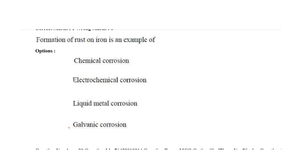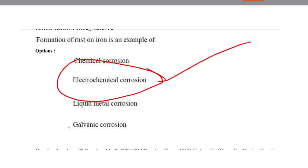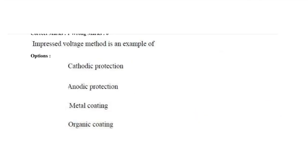Next question: formation of rust on iron is an example of which type of corrosion? The answer is electrochemical corrosion. Everyone thinks it is chemical corrosion, but it undergoes an electrochemical mechanism leading to electrochemical corrosion. Option 2 is correct — don't make the mistake of choosing chemical corrosion.